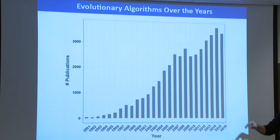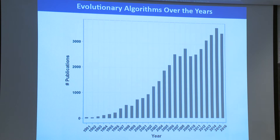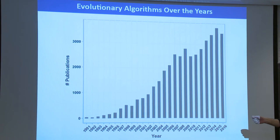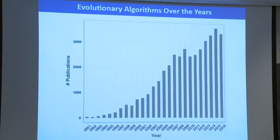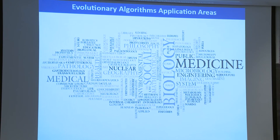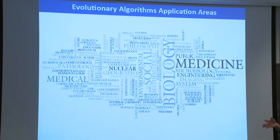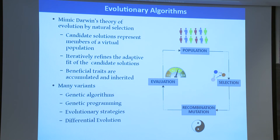There is another class of algorithms not shown in the previous slide: evolutionary algorithms. If you search ISI Web of Science, in the past 20 to 25 years there have been more than 40,000 publications on evolutionary algorithms, spanning subject areas from biology and medicine to anthropology and paleontology. What exactly are evolutionary algorithms? If you are familiar with Darwin's theory of evolution, the evolutionary algorithm is simply a computational realization of that very theory.